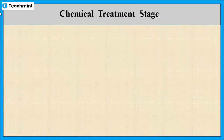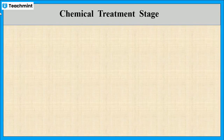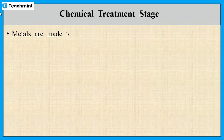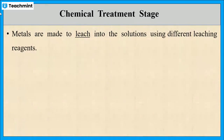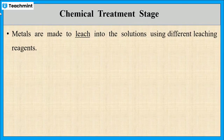The next stage is the chemical treatment stage. In this stage, metals are dissolved in solution using different reagent agents. Let us see what leaching reagents can be used for this purpose.